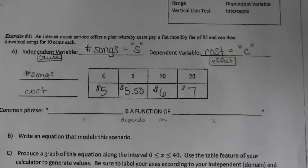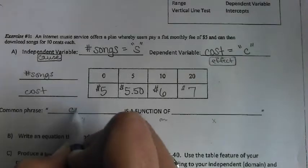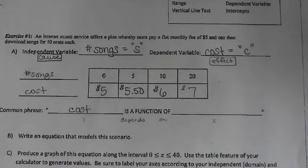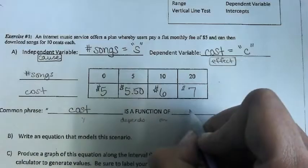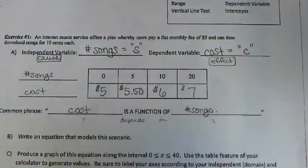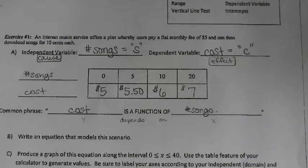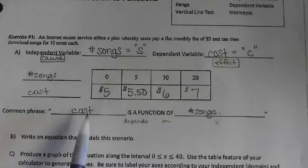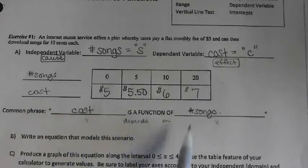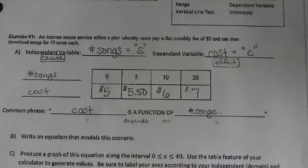Here is the more common phrase that we start to use in Algebra 2 versus Algebra 1. We say that the cost is a function of the number of songs. Y is a function of X. That's because Y depends on X. Y is changing as a result of X changing.